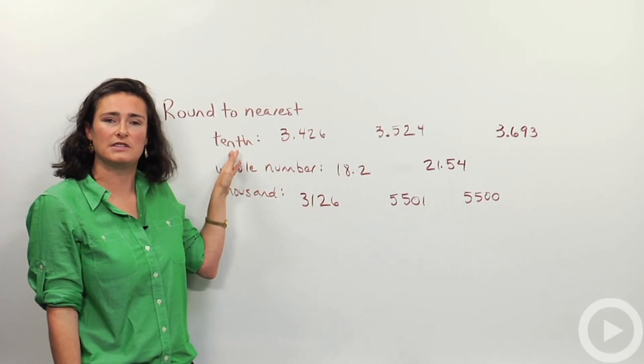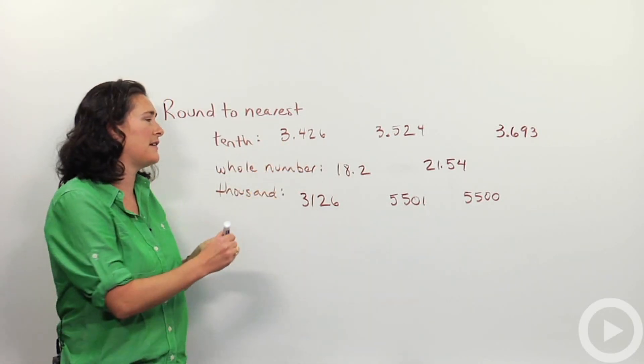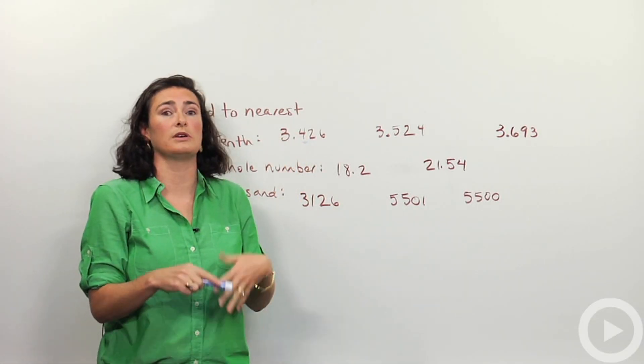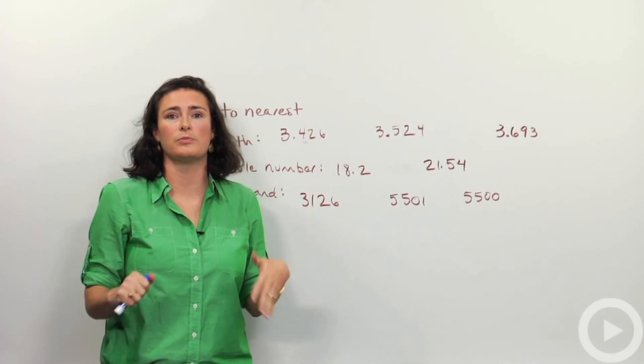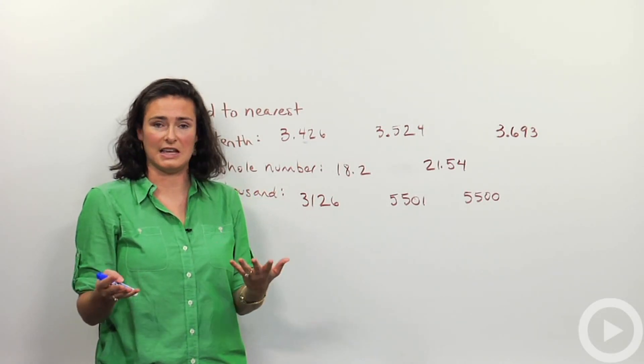When this tells me to round to the nearest tenth, the tenth place is the first number that comes after the decimal, right here. So I'm rounding three point something. It'll be three point four, or three point five, or three point nine, or something. It's going to be three point some number, because that's the tenth place.